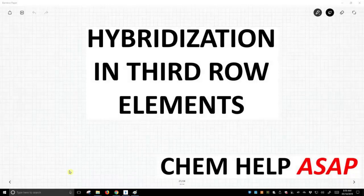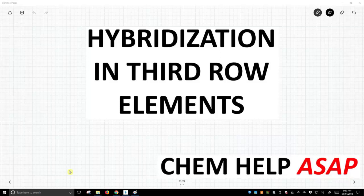Good day from Chem Help ASAP. We've talked about hybridization for second row elements, and we've sort of ignored third row elements. So let's see what happens with hybridization in third row elements.